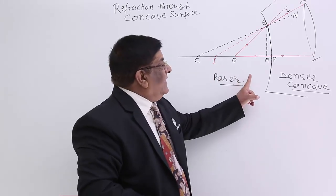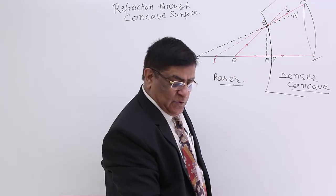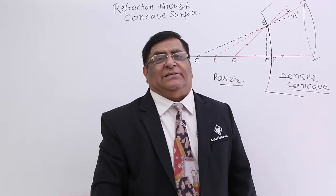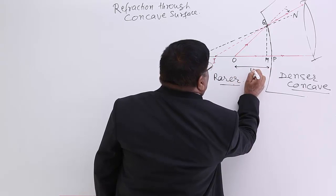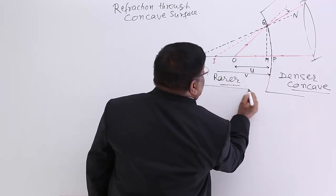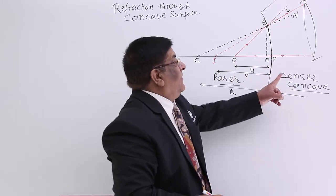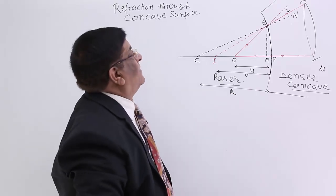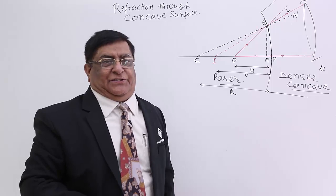What we have followed: rarer to denser — the ray will always bend towards the normal. Now, where are the distances? The object-to-pole distance is U, image-to-pole distance is V, and centre-of-curvature-to-pole distance is the radius of curvature R. The medium has refractive index mu, and the curvature is 1 upon R.